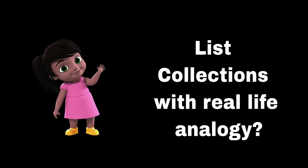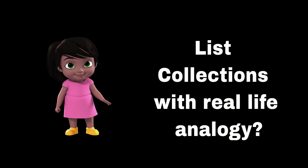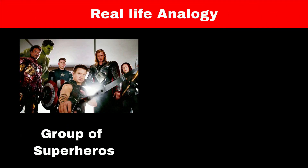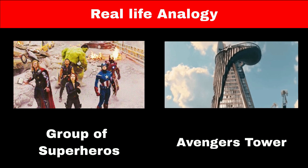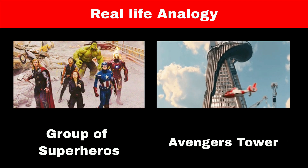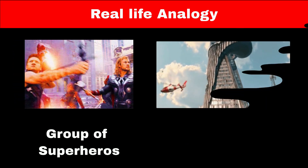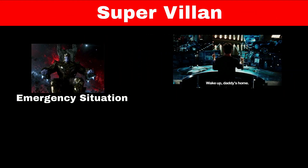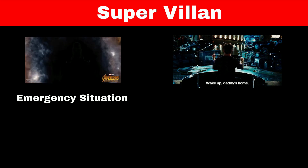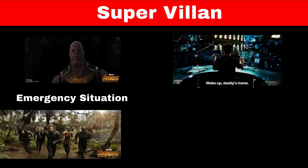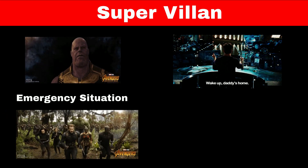Can you explain List collection with a real life analogy? Imagine the Avengers, a team of superheroes who live in the Avenger Tower. Whenever an emergency situation arises, Iron Man and Jarvis need to figure out which superhero to send on the mission.